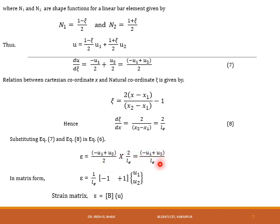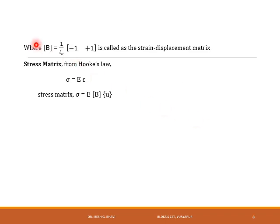Writing in matrix form, ε = (1/Le)·[−1, 1]·[u1; u2], or ε = B·u, where B = (1/Le)·[−1, 1] is called the strain-displacement matrix, because B relates strains ε to the nodal displacements u.